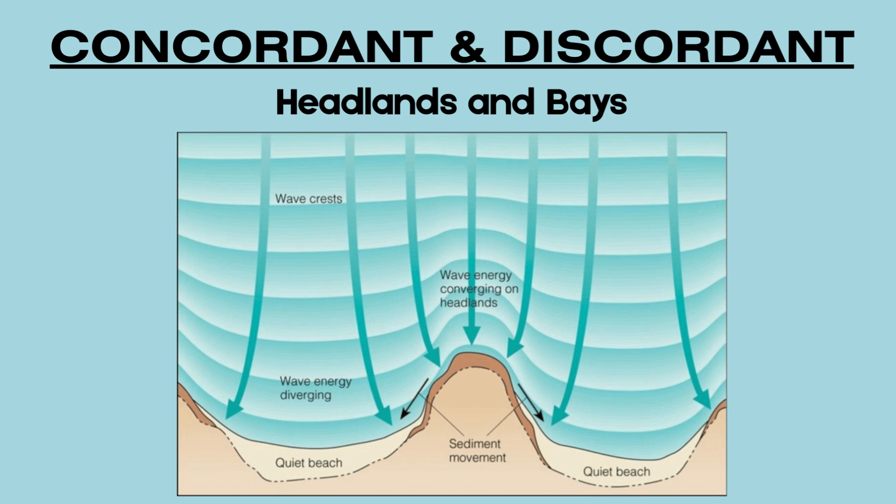Meanwhile, wave energy diverges in the bays, making the energy weaker. This creates calmer conditions where sediment is deposited, forming quiet beaches. Over time, sediment is moved from the headlands into the bays, further shaping the coastline. So in short, headlands are eroded, bays are sheltered, and the coastline becomes more irregular due to differential erosion.